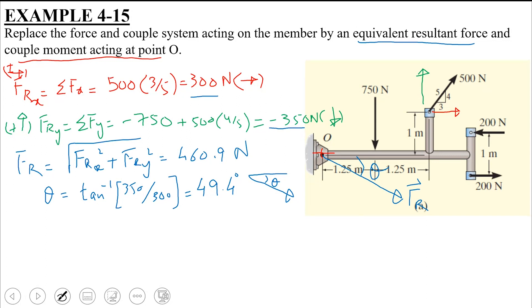So in order to find out that couple of moments, we are going to use the same sign convention. That is, MRO, counter clockwise moments I am taking as positive, it should be equal to summation M plus summation MO. That's it.